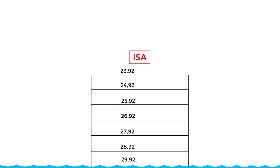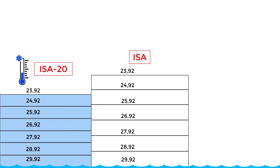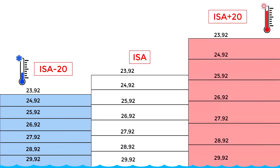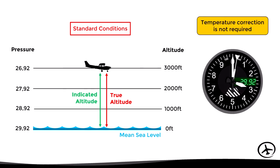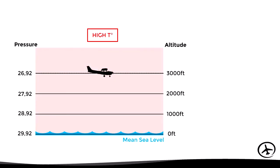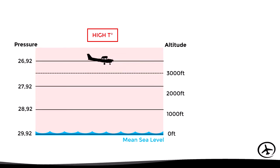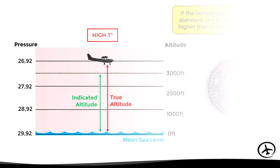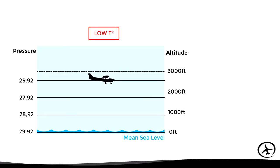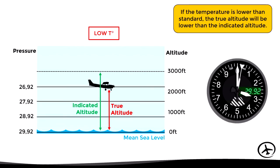Here we have the typical distribution of isobars under standard temperature conditions. When the temperature is lower than standard, the pressure changes more rapidly with altitude and therefore the isobars will be less spaced. On the other hand, when the temperature is higher than standard, the pressure changes slowly with altitude and therefore the isobars will be further apart. The pressure at sea level is the same in all three cases, meaning the QNH is the same. Under standard temperature conditions the indicated and true altitude will be equal, but in high temperature conditions the true altitude is higher than the indicated altitude, while in low temperature conditions the true altitude will be lower than the indicated altitude.